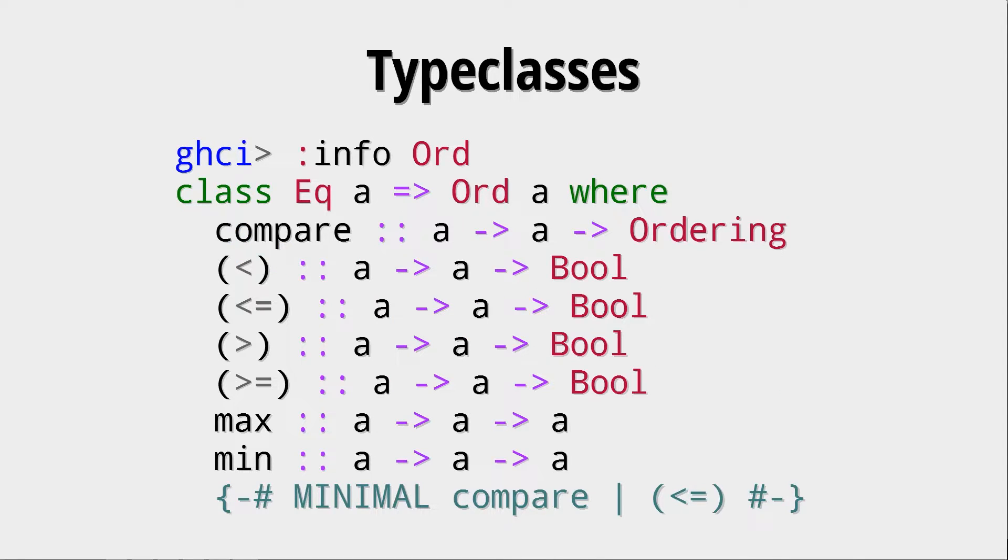Another important type class is Ord, where we have some ordering. By the way, what we can see here is that Eq implies Ord, or it doesn't really imply Ord, it's the other way around. So, in order for a type to be in the Ord type class, it also needs to be in the Eq type class. So, everything that can be ordered can also be checked for equivalence. And here we see that the minimal type class that we need to give is either the smaller equals or the compare function.